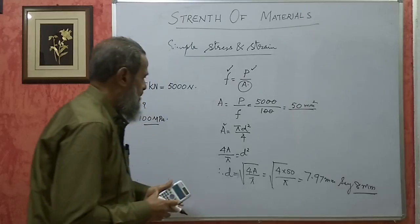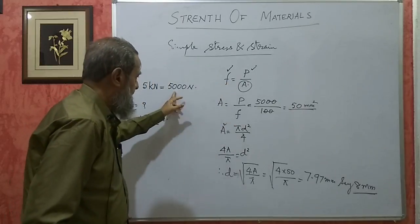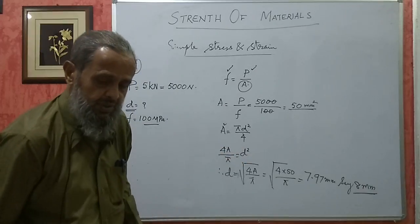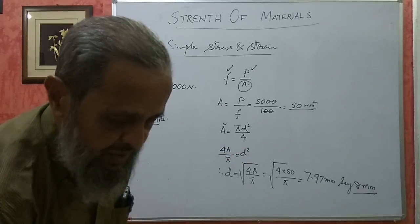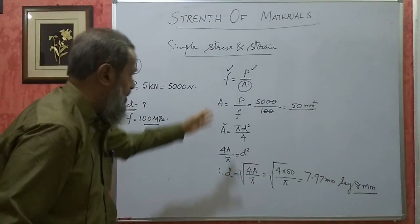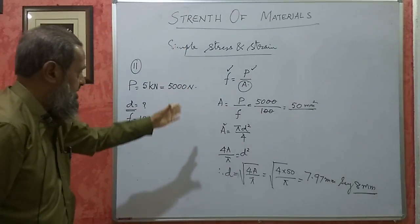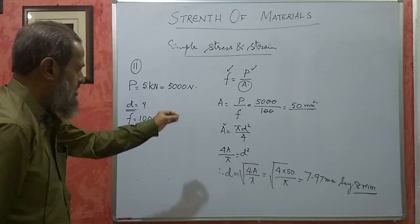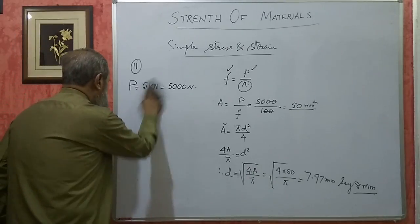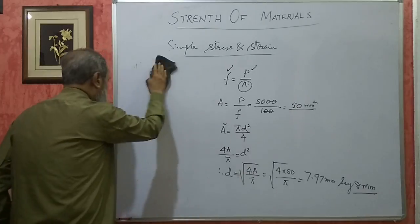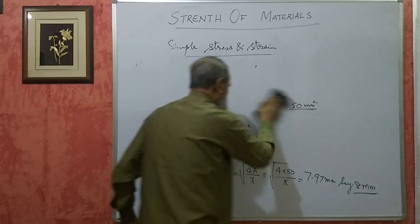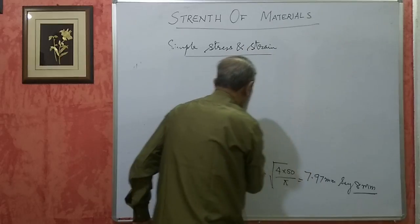This is how it should be solved. Stress is given, so we get first the area, then from the area we can get the diameter. It is a very simple problem on simple stress and strain. I cannot do all the problems — I have selected a few from the question bank.